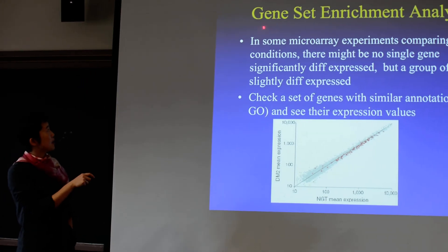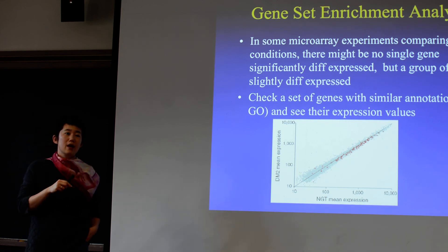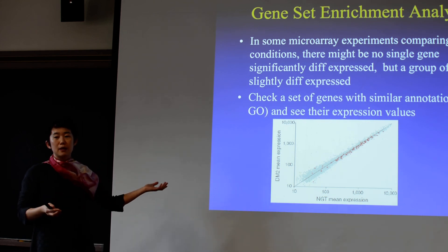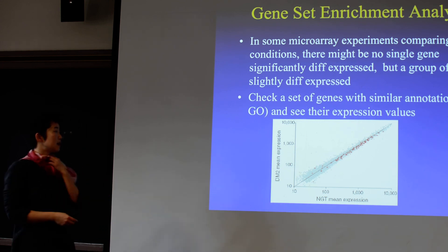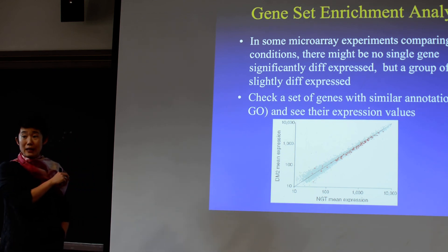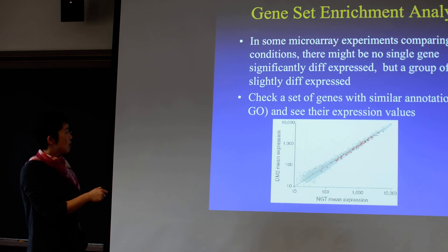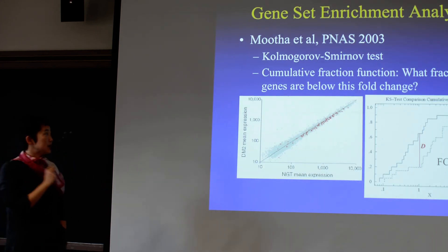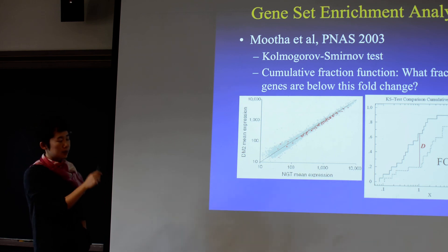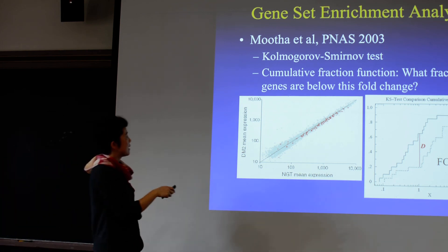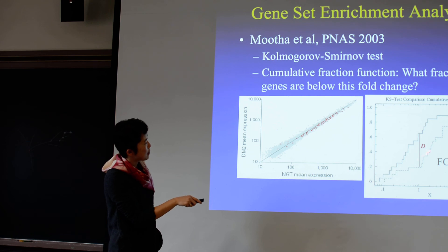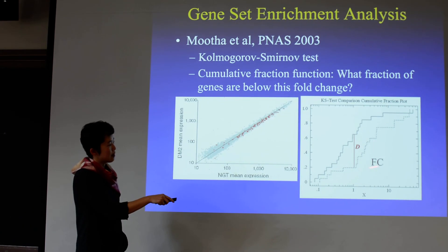They developed a computational method called Gene Set Enrichment Analysis. If somebody pre-defined a gene set — for example, gene ontology was already defined before the experiment — you look at whether those genes defined by a specific GO term have something to do with your experiment. You can actually see enrichment. The group used a nonparametric test to look at this — specifically, the Kolmogorov-Smirnov test.